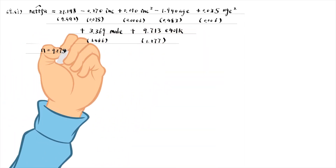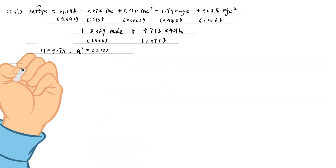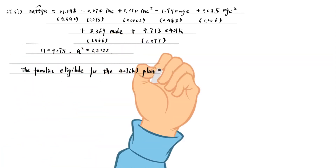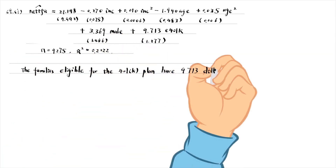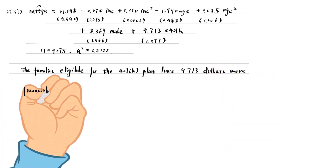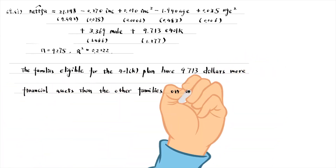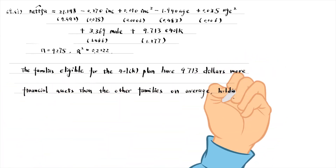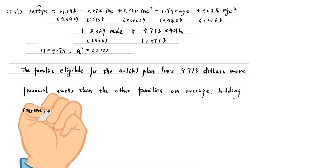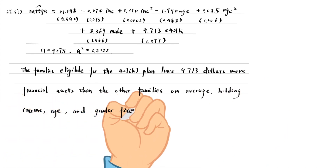The families eligible for the 401 plan have $9,713 more financial assets than the other families on average, holding income, age, and gender fixed.